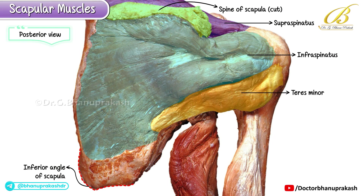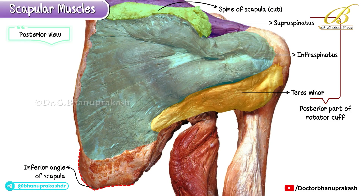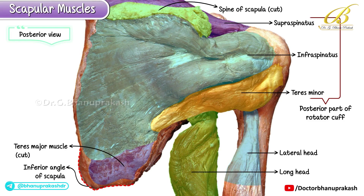Arising from the lateral border of the scapula is the teres minor muscle. The supraspinatus, infraspinatus, and teres minor all unite with the capsule to form the posterior part of the rotator cuff. The lateral border of the scapula also gives origin to the teres major muscle, and the cut portion of this muscle can be observed near its origin.